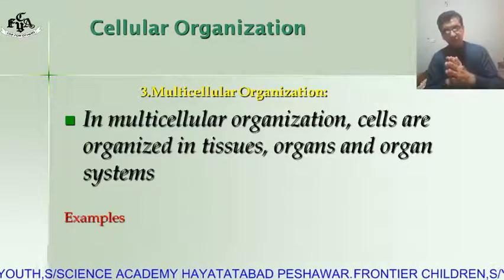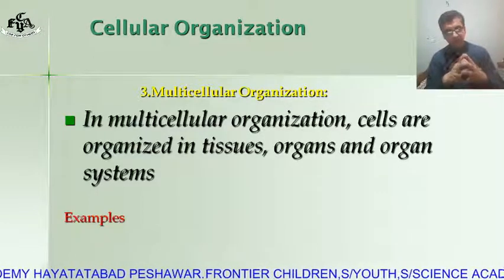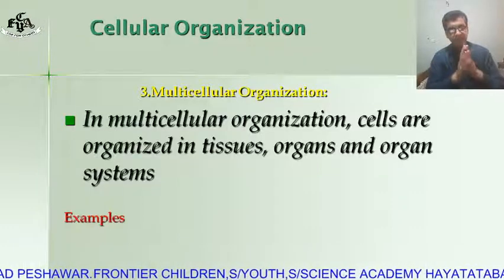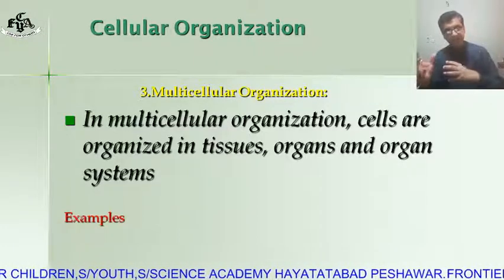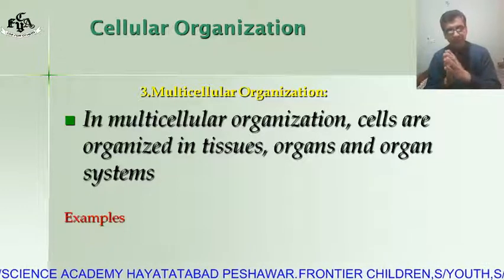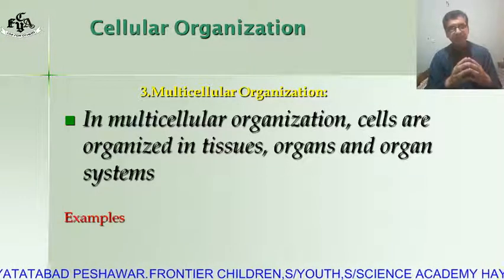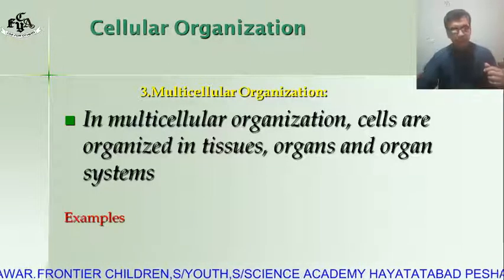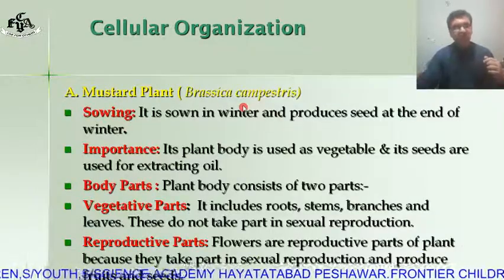The next organization is multicellular organization. In multicellular organization, cells combine to form tissue, tissue combines to form organs, organs combine to form organ systems, and different organ systems coordinate with each other to form an organism. That organism is called a multicellular organism.